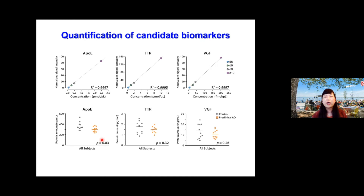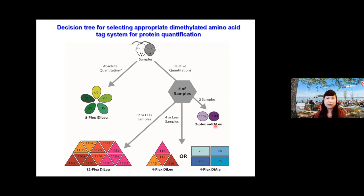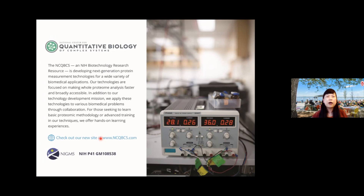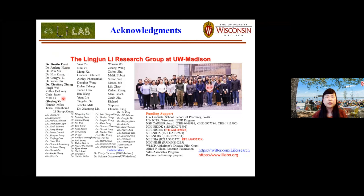To summarize, we have developed a suite of chemical tags based on dimethylated amino acids. Depending on your experimental goal — whether absolute quantification using biplex iDiLeu, or relative quantification with two samples using 4-plex, or higher throughput with 12-plex or 21-plex isobaric tagging — there is an appropriate option. With that, I want to acknowledge the P41 grant, in particular Josh for the leadership to build this national center. Thank you all for joining and for tuning in.